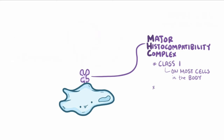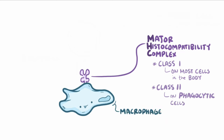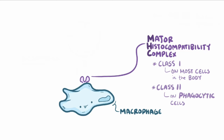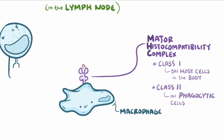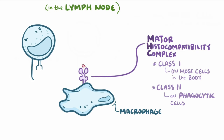MHC class 2 molecules are found specifically on phagocytic cells, like macrophages, which destroy and digest foreign pathogens like bacteria. Once a macrophage destroys a bacterium, it presents a piece of that bacterium on its MHC class 2 receptor, and the macrophage then makes its way to the lymph node to find some T-lymphocytes.